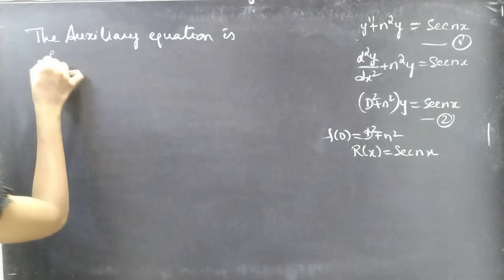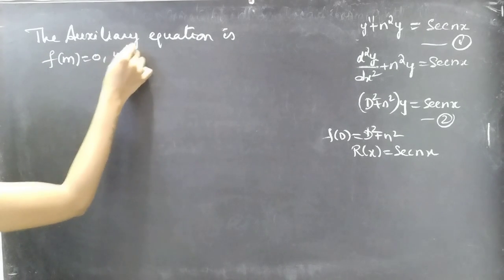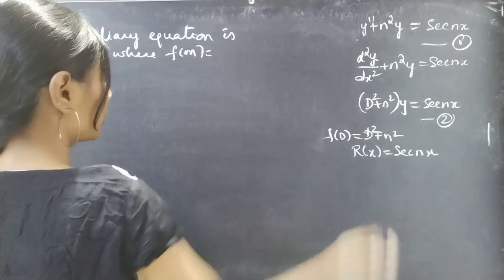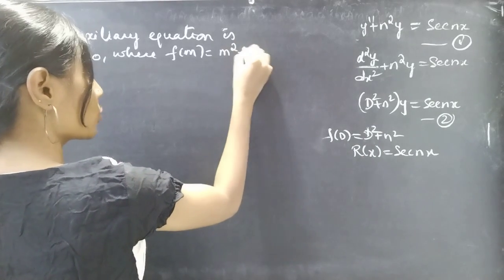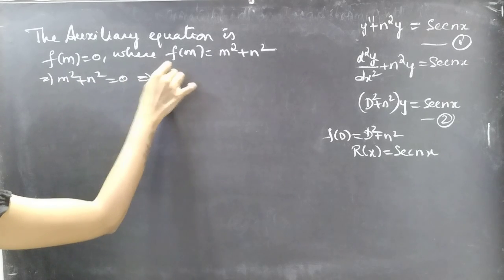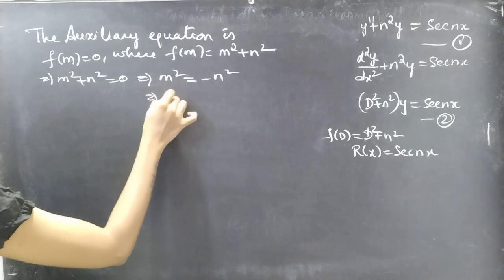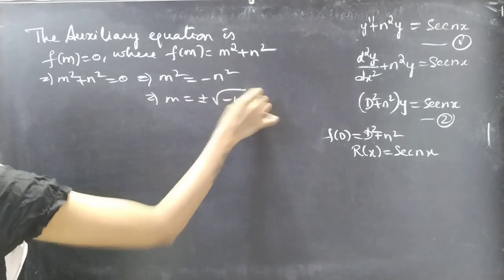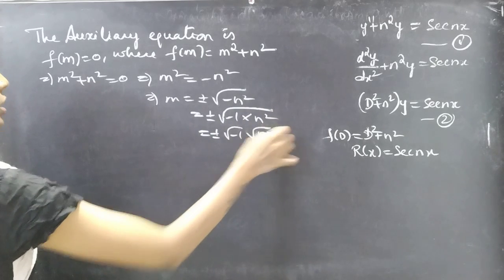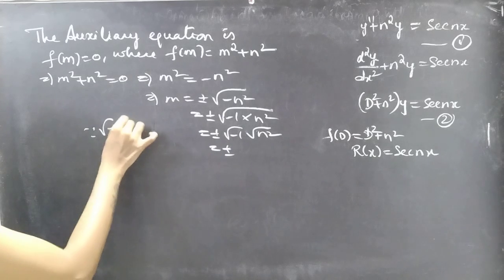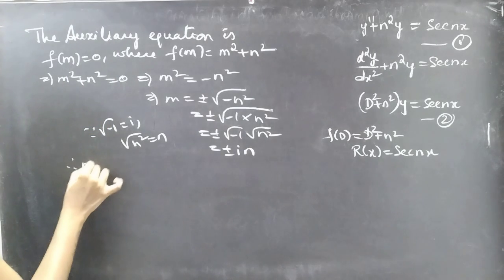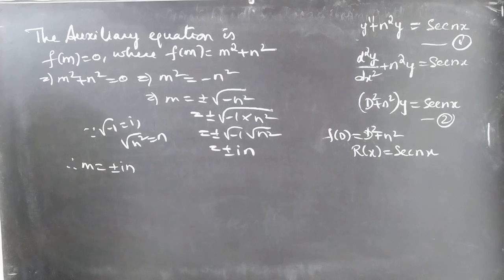The auxiliary equation is f(m) = 0. Since f(D) = D² + n², we replace D with m to get f(m) = m² + n² = 0. Solving: m² = -n², so m = ±√(-1)·√(n²) = ±in. The roots are complex conjugates: m = ±in.